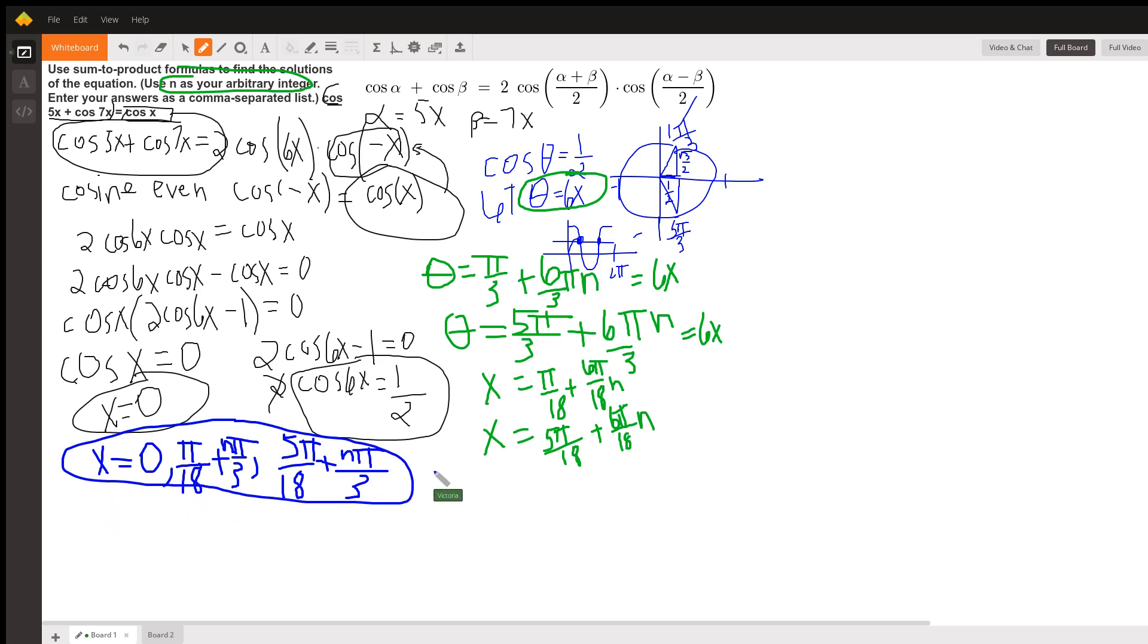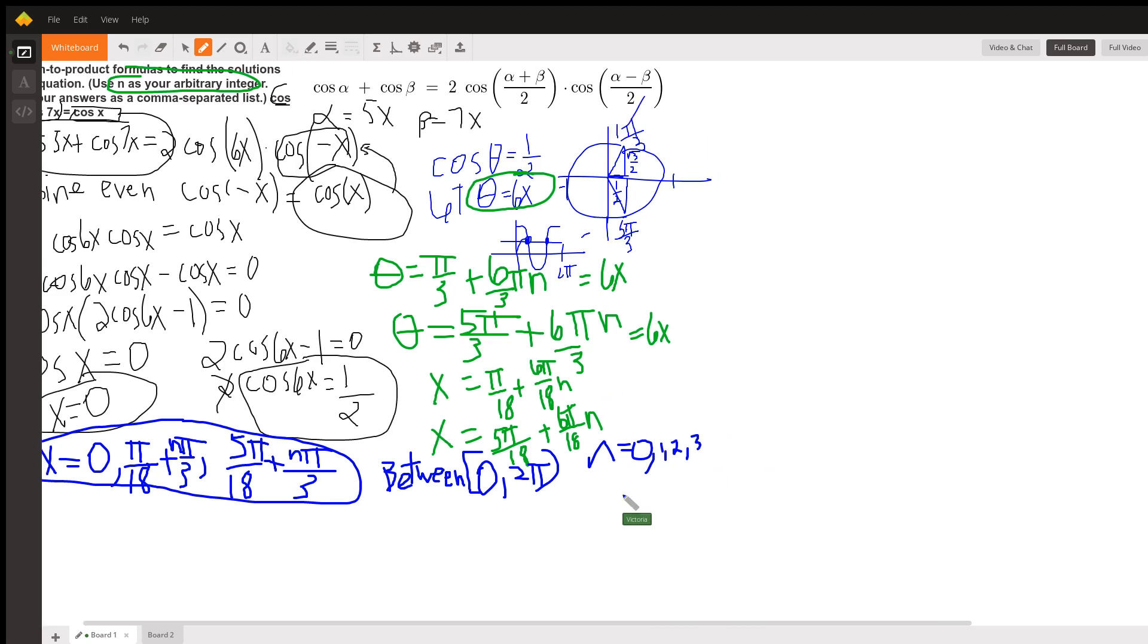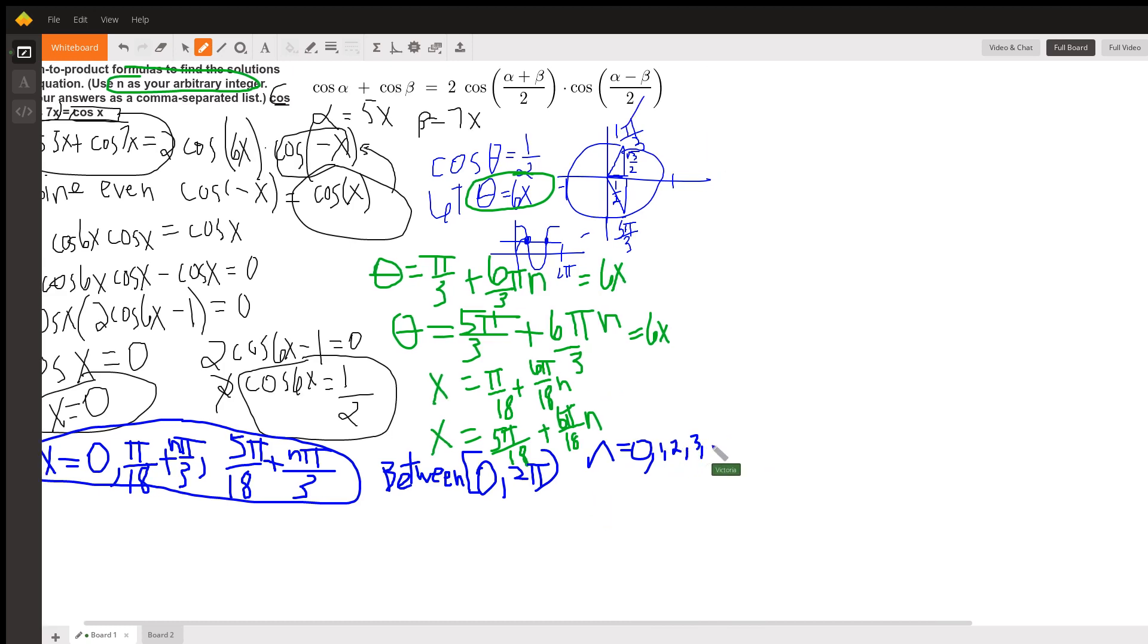If you want just the ones between 0 and 2 pi, then just use n equals 0, n equals 1, n equals 2, n equals 3, n equals 4, and n equals 5. And that'll get you all 12.